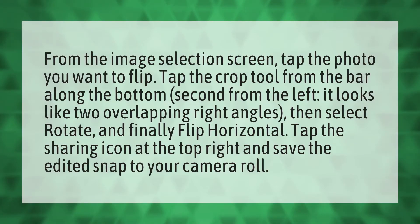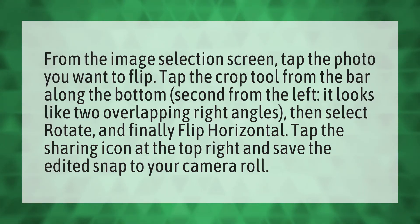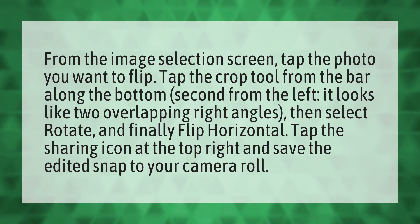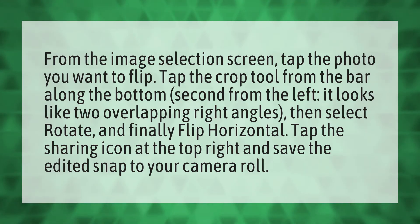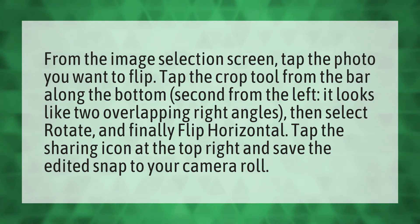From the image selection screen, tap the photo you want to flip. Tap the crop tool from the bar along the bottom — second from the left — it looks like two overlapping right angles. Then select rotate and finally flip horizontal. Tap the sharing icon at the top right and save the edited snap to your camera roll.